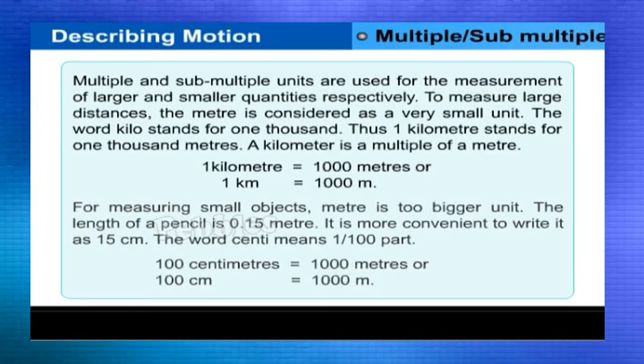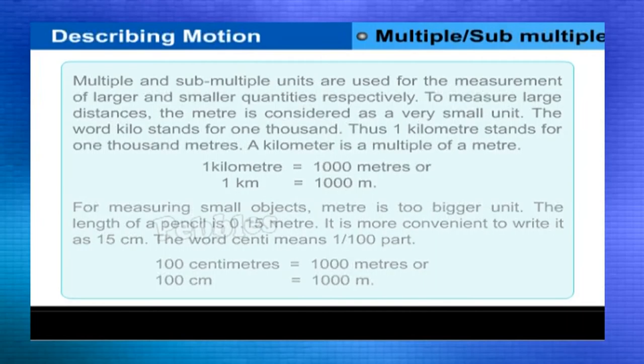For measuring small objects, meter is too big a unit. The length of a pencil is 0.15 meter. It is more convenient to write it as 15 centimeters. The word centi means one by hundredth part. Hundred centimeters is equal to one meter, or 100 cm = 1 m.